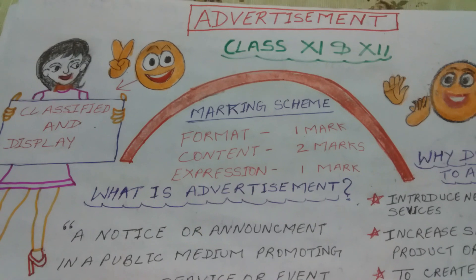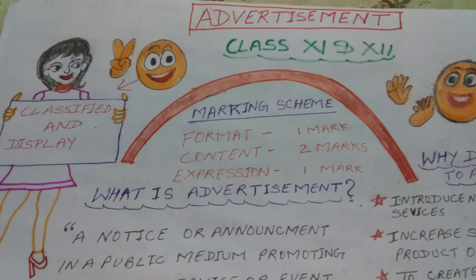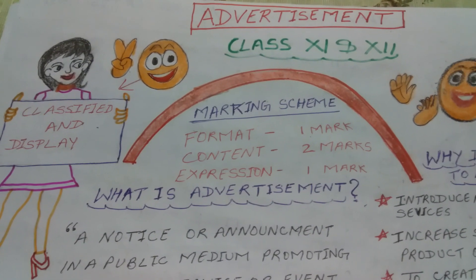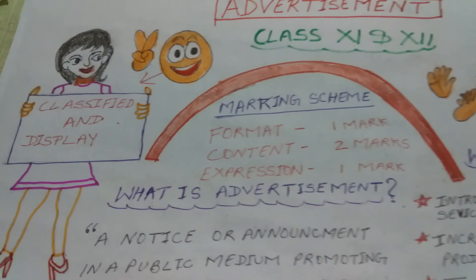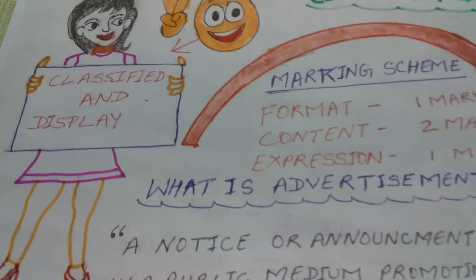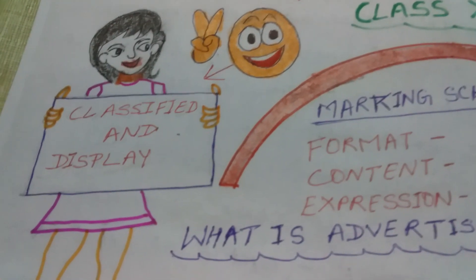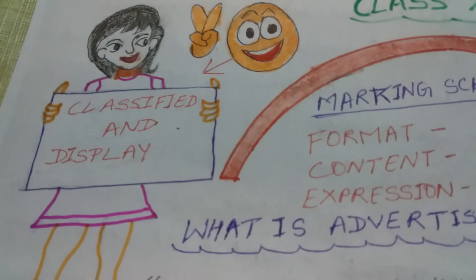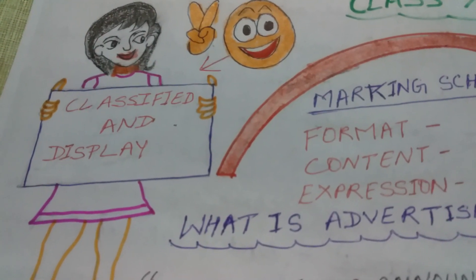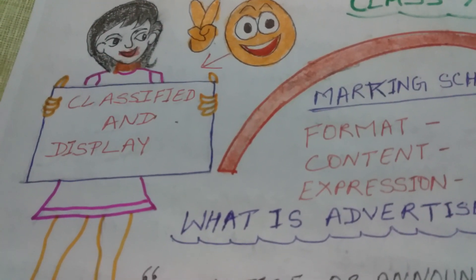Now we will see how many types of advertisements there are. Advertisements are of 2 types: classified and display.